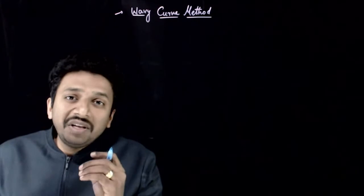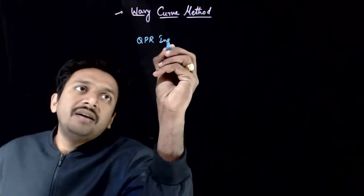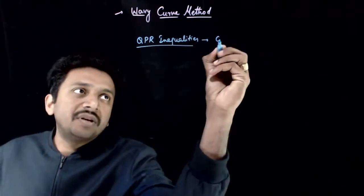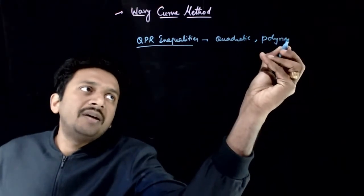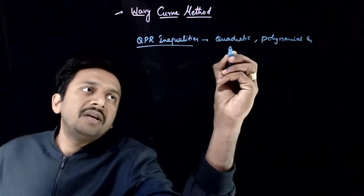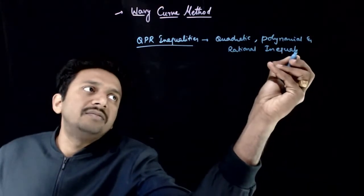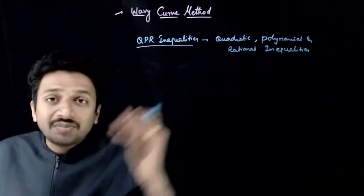Welcome students. Till now, you have understood how to solve linear inequalities. Now let us go forward. The Wavy Curve method is a method that can be used to solve QPR inequalities — Quadratic, Polynomial and Rational Inequalities. Using the Wavy Curve method, you can solve these three types of inequalities.